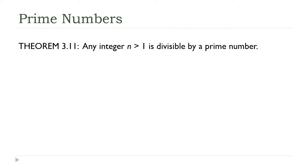To prove this, we're going to use a new method called proof by cases. The logical form for this is: P and Q; P implies R; Q implies R; therefore R.